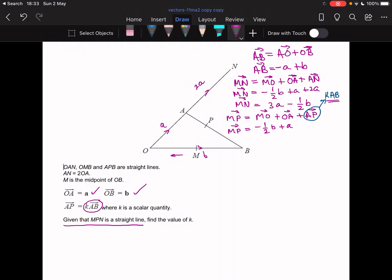And then I've got this AP. We said it's kAB. So I'm going to say plus k, and then AB I worked it out already, it's minus a plus b. So I'm going to expand and simplify. So I'm copying my minus half b plus a. Then multiplying by k, I get minus ka plus kb.